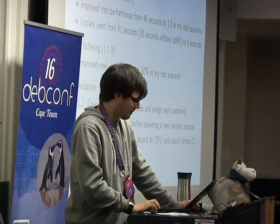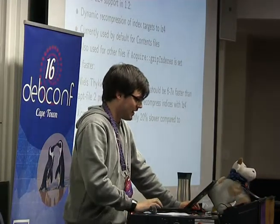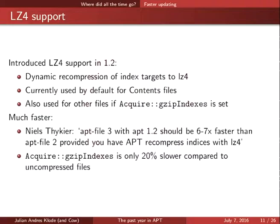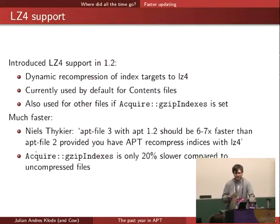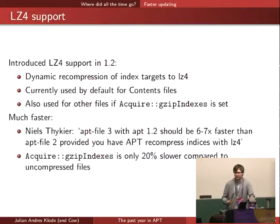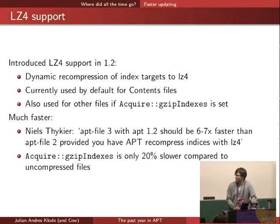Another trick, especially for apt-file, is we introduced LZ4 support in 1.2, which means we can dynamically recompress files we fetch using the LZ4 compression algorithm. We're doing this especially for contents files because they are really huge and take a lot of time to compress with Gzip. Previously, we had to decompress them, apply the pdiffs, and then recompress, which was insanely slow — taking multiple seconds per file. With LZ4 support we can do this in far shorter time, I think less than a second now.